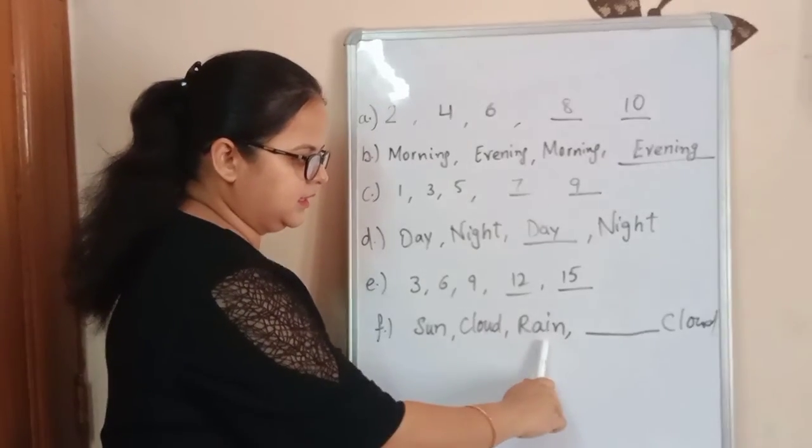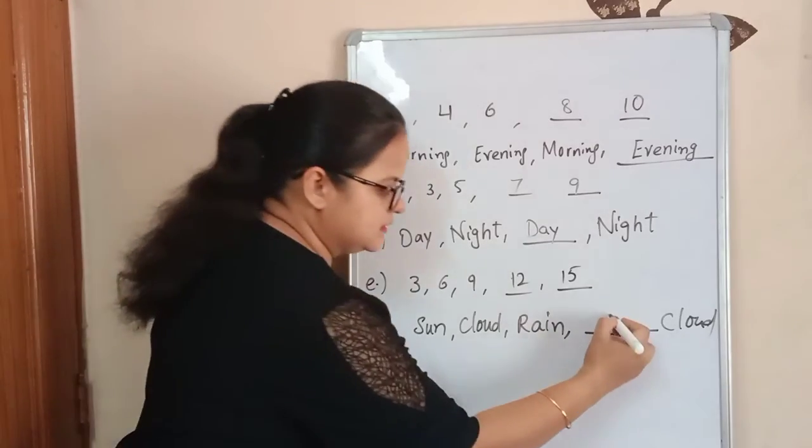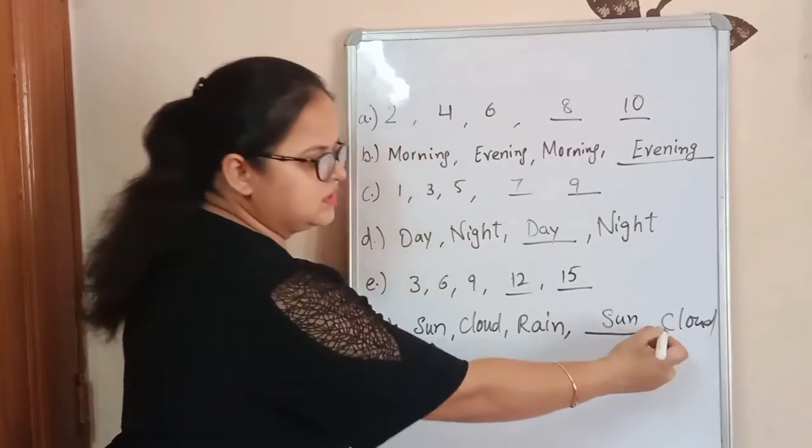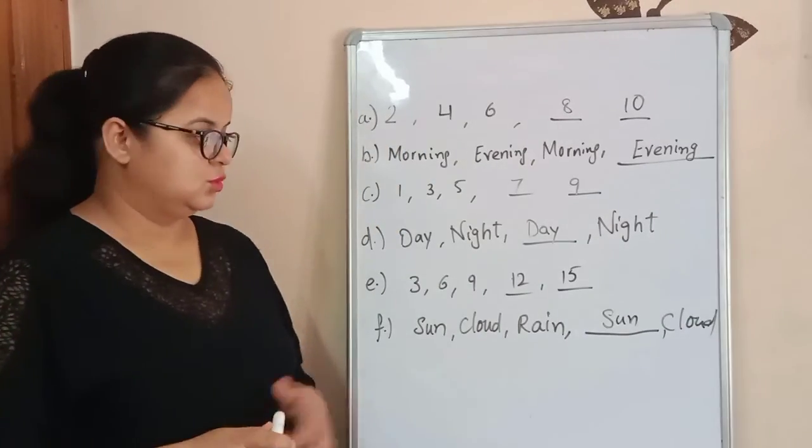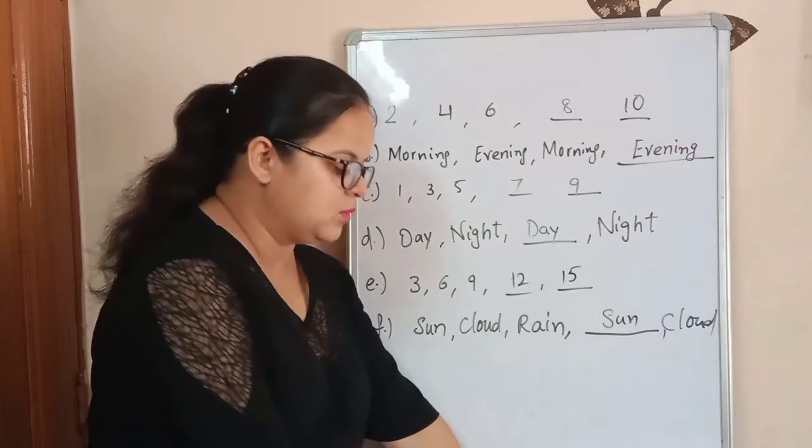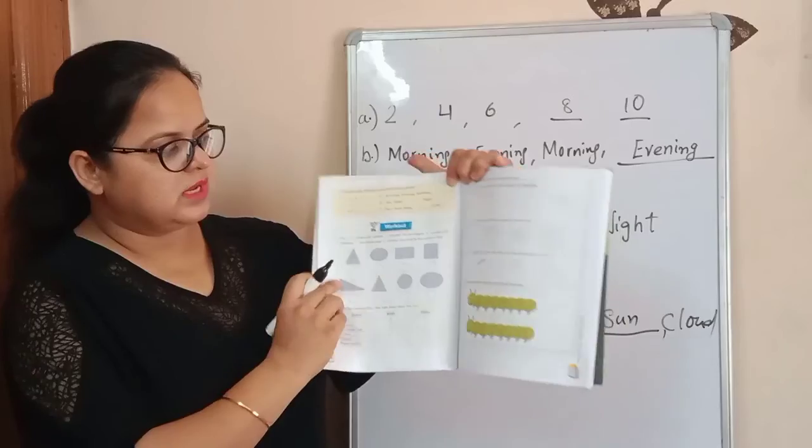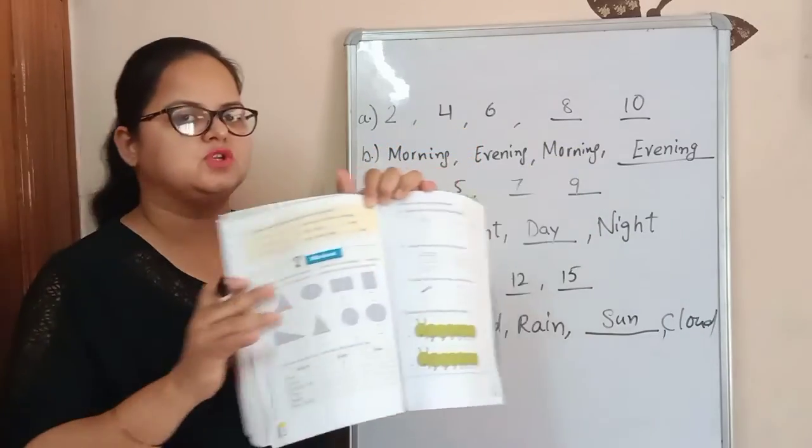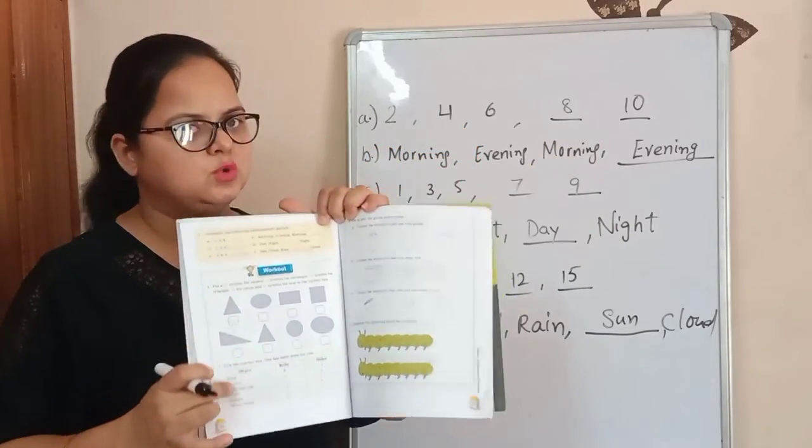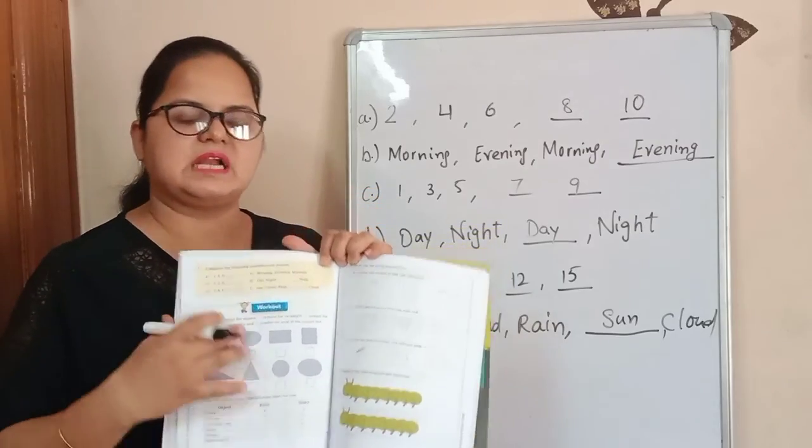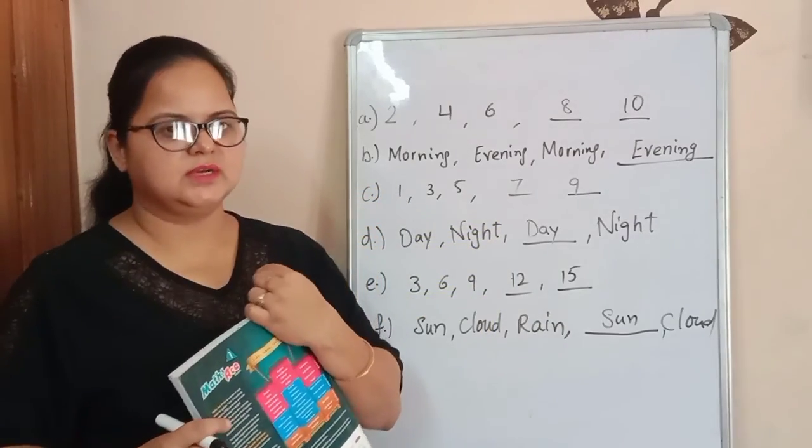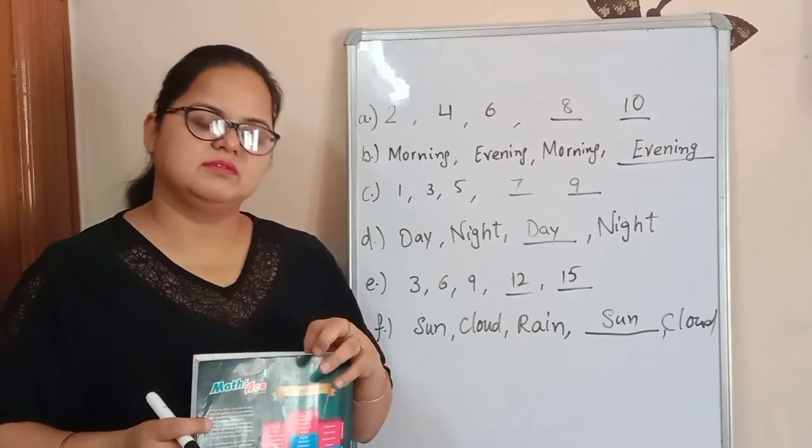Sun, cloud, rain. Again, sun, cloud is written here. So this is done like, I hope you all have done it in your books now. Very well done. Now, here is the workout portion. This is your homework for today. Do this workout pages and send it by evening to me. Okay. Bye-bye. Take care.